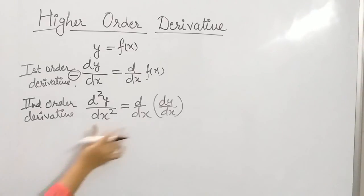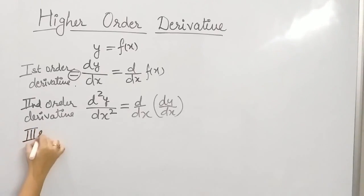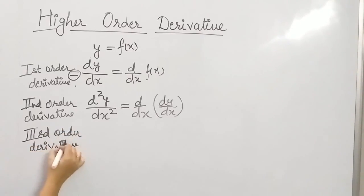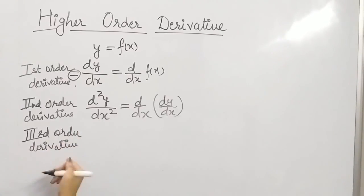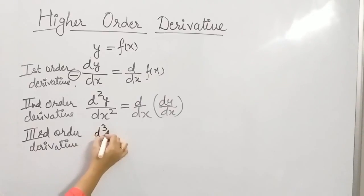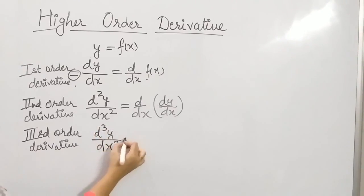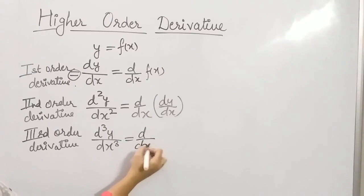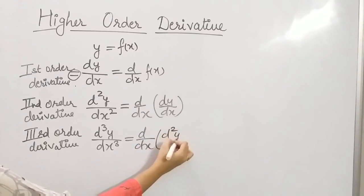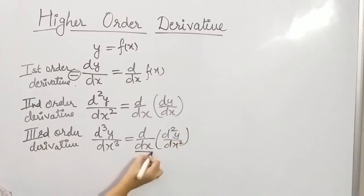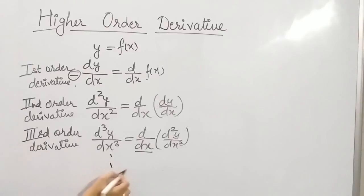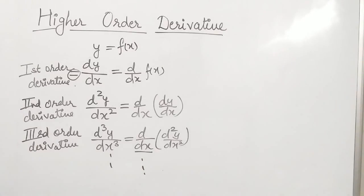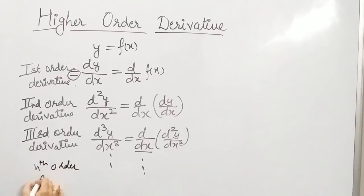Similarly, we can find the third order derivative. For the third order, we differentiate the second order derivative with respect to x, and we get d³y upon dx³. That means differentiation of the second order derivative with respect to x.